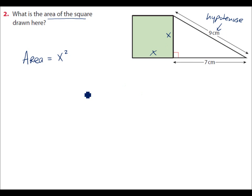So Pythagoras' Theorem says a squared equals b squared plus c squared. So the large side, 9 squared, is equal to the other two sides squared added together. 7 squared plus x squared. So 81 is equal to 49 plus x squared.